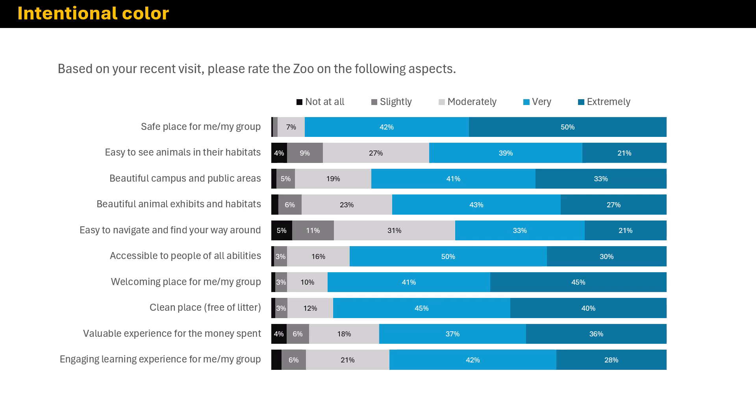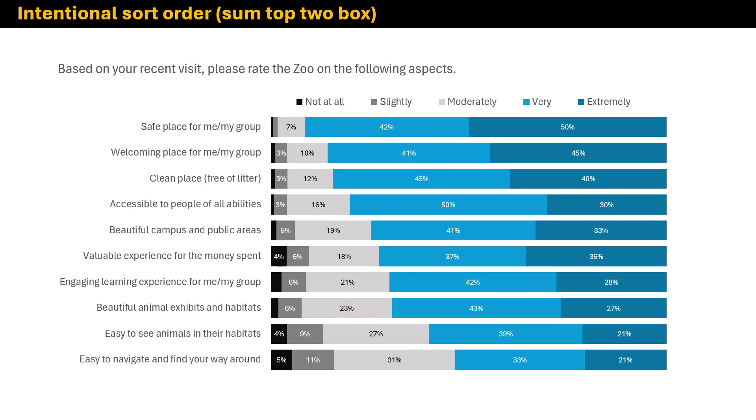The other thing we can do to make this even better is intentional ordering of the bars. Right now this is just how the survey question was worded and what the survey software spit out. But I can go into my Excel source and sort the data so the highest rated items are at the top and the lowest rated items are at the bottom. I'll create a calculated field, sum the top two box responses — very and extremely — and sort by that column from greatest to least.